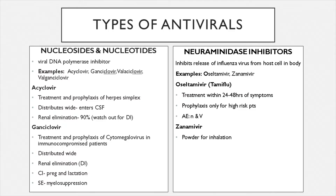When it comes to antivirals, there are mainly two types: nucleosides or nucleotides, and neuraminidase inhibitors. Please recap on the mechanism of action of these antivirals. Nucleosides are DNA polymerase inhibitors — DNA polymerase is the enzyme that opens up the DNA strand to allow for DNA replication. If you stop that process, you stop the virus from replicating and spreading further.